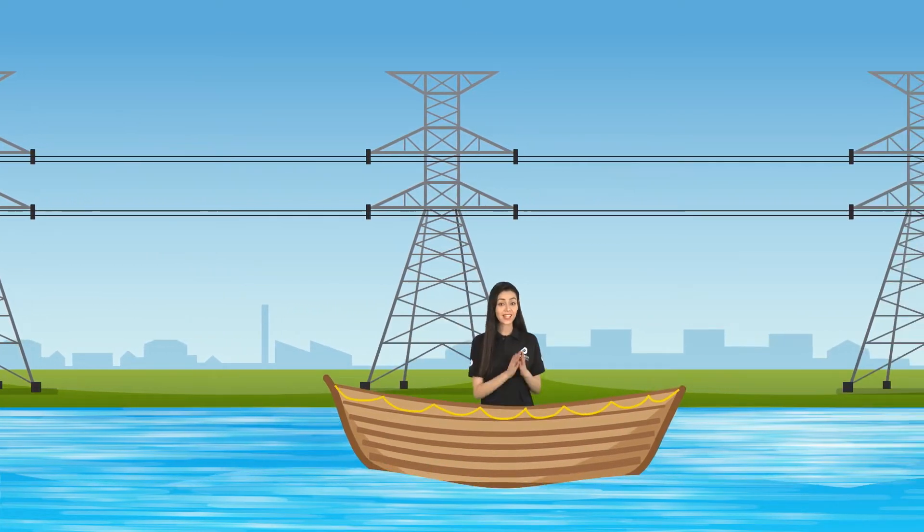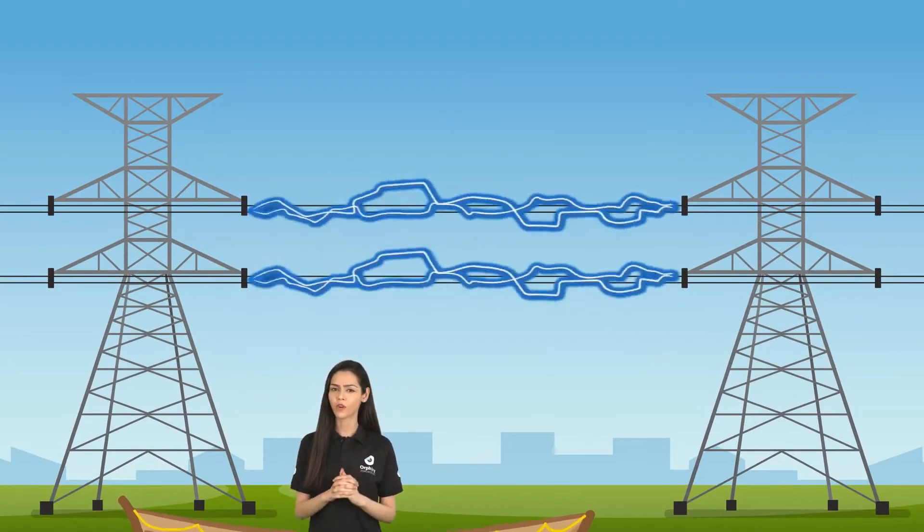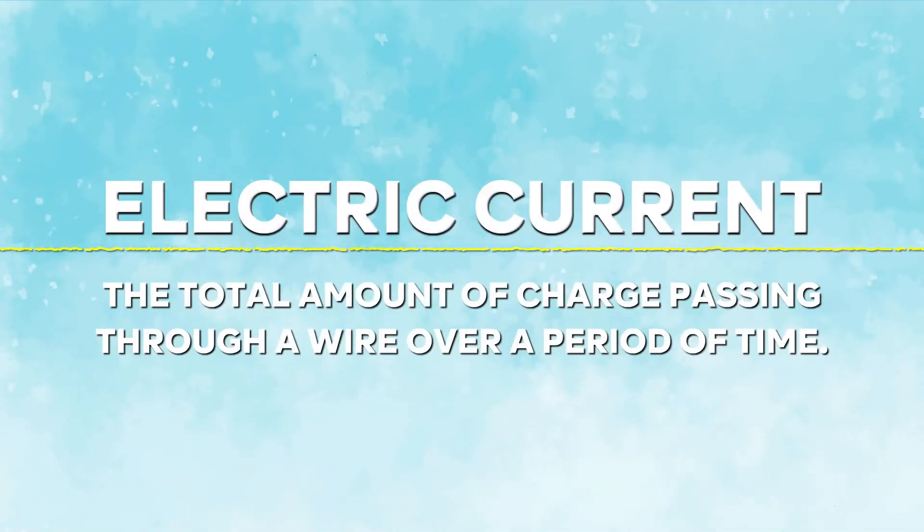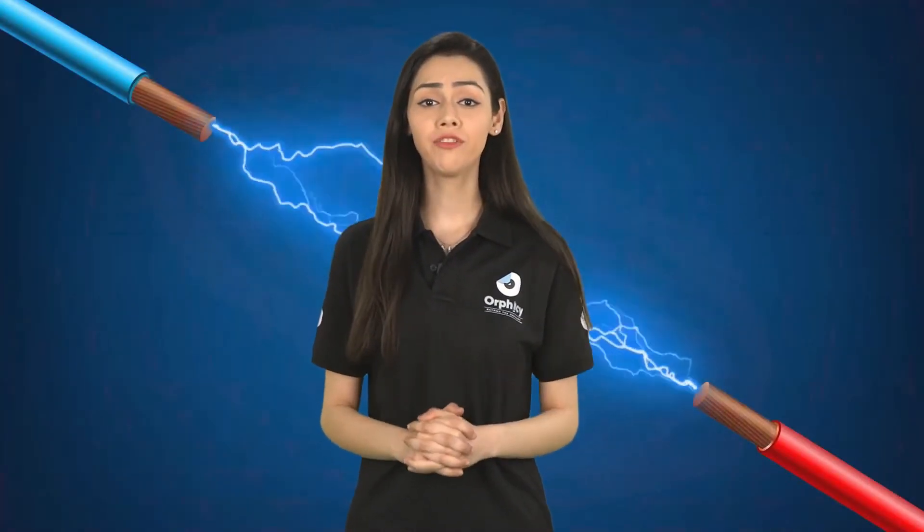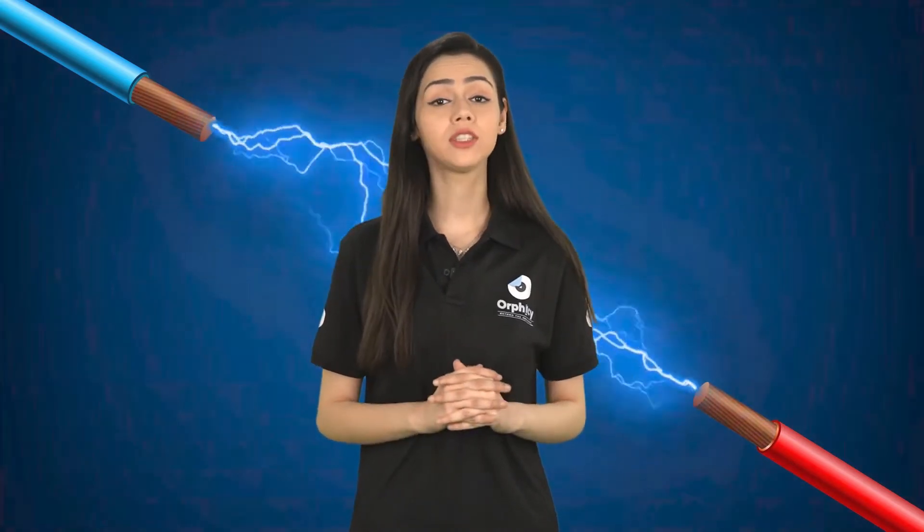And when we say that electricity is flowing, what we are actually talking about is the flow of electrons. Electric current is the total amount of charge passing through a wire over a period of time. But how does current actually form? What can it pass through and what determines how strong is it going to be?